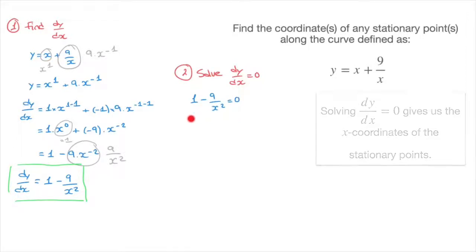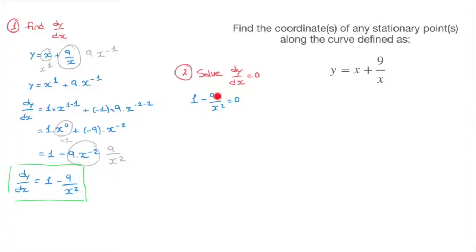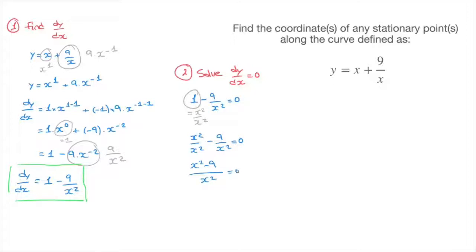The trick for solving this type of equation is to write all terms on the same denominator. We have 9 over x squared, so we write 1 as x squared over x squared. Consequently, we rewrite the equation as x squared over x squared minus 9 over x squared equals 0. Since both terms share the same denominator, this becomes x squared minus 9 over x squared equals 0. The only way a fraction can equal 0 is if the numerator equals 0, so we solve x squared minus 9 equals 0.